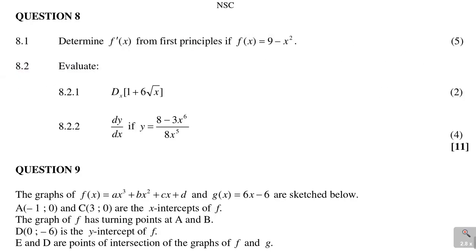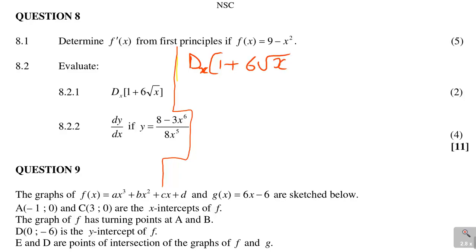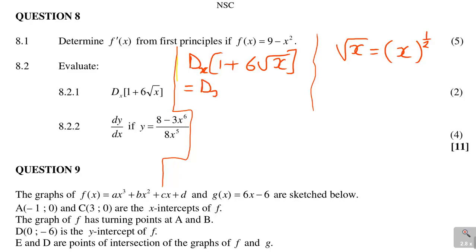Let us look at the next one. It says differentiate d/dx of (1 plus 6 times the square root of x). This is 2 marks. What you need to know is what square root of x means: you must change it into exponent form. That square root means a bracket to the power of one half, so it becomes x to the power of one half. So you have d/dx of (1 plus 6 times x to the power of one half).